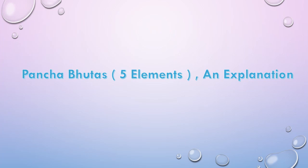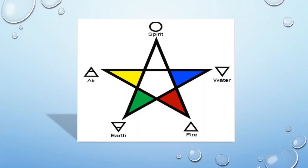Panchabhuthas is an important concept in Hindu philosophy. Let's look at it for what it actually represents. First, the five elements are Fire, Water, Earth, Air, and Ether. The fifth element, Ether, is also called Prana, Spirit, and many other names which are related to each other.